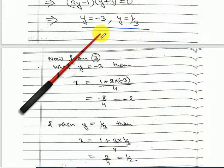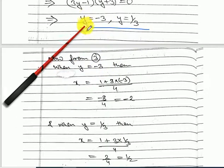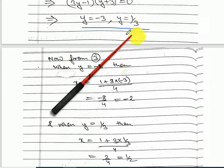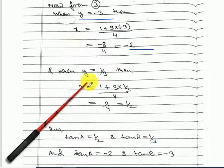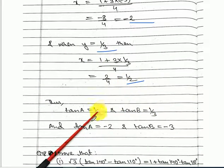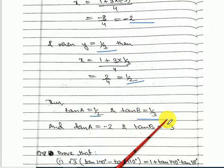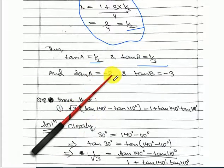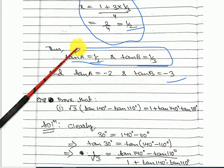So tan B equals minus 3 or tan B equals 1/3. Use these two values to get x. When y equals minus 3, x equals minus 2. When y equals 1/3, x equals 1/2. Since x is tan A: tan A equals 1/2 and tan B equals 1/3, or tan A equals minus 2 and tan B equals minus 3. These are the two answers.